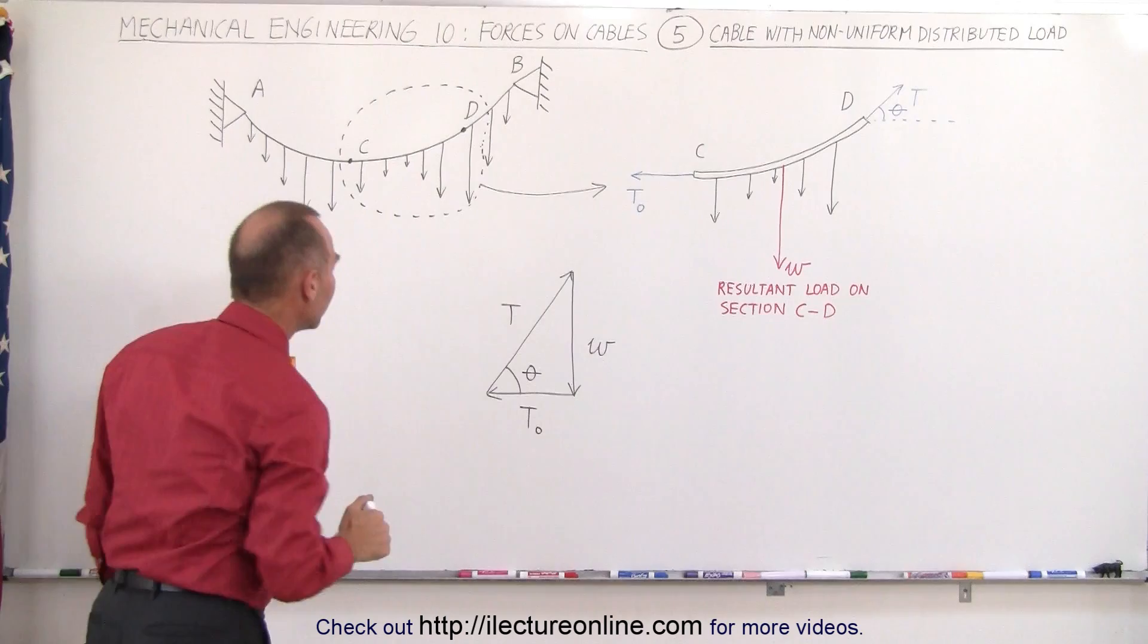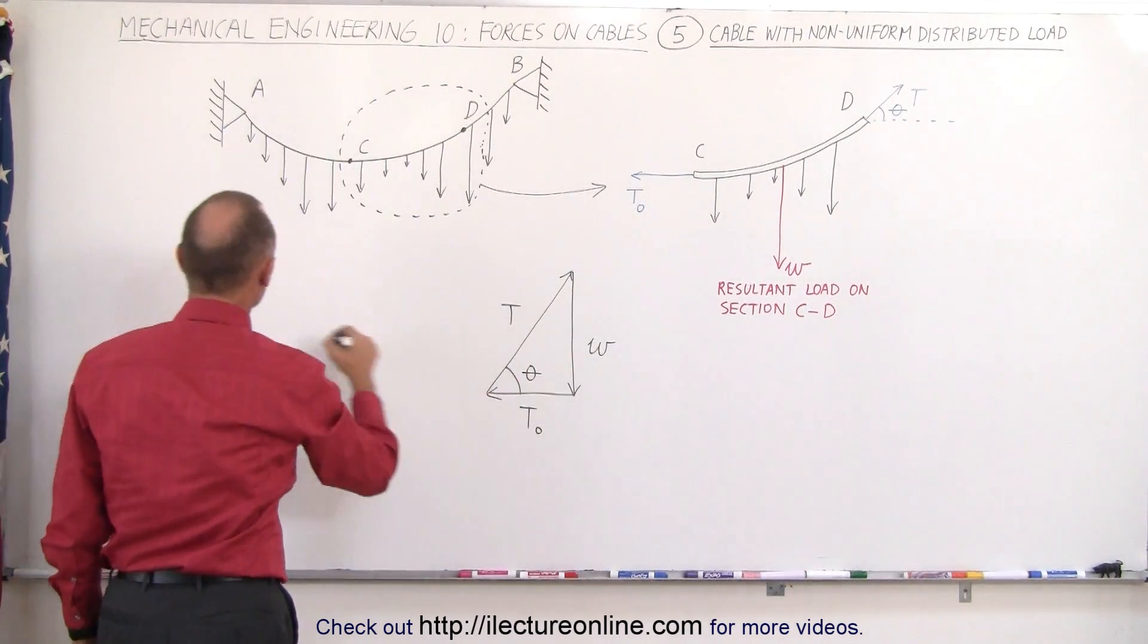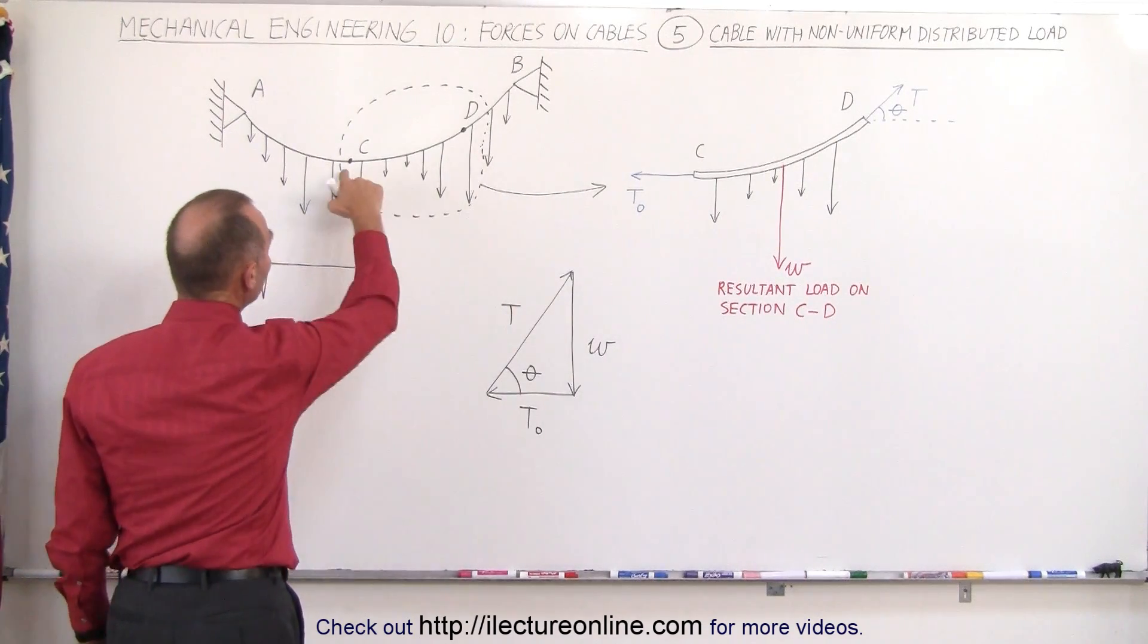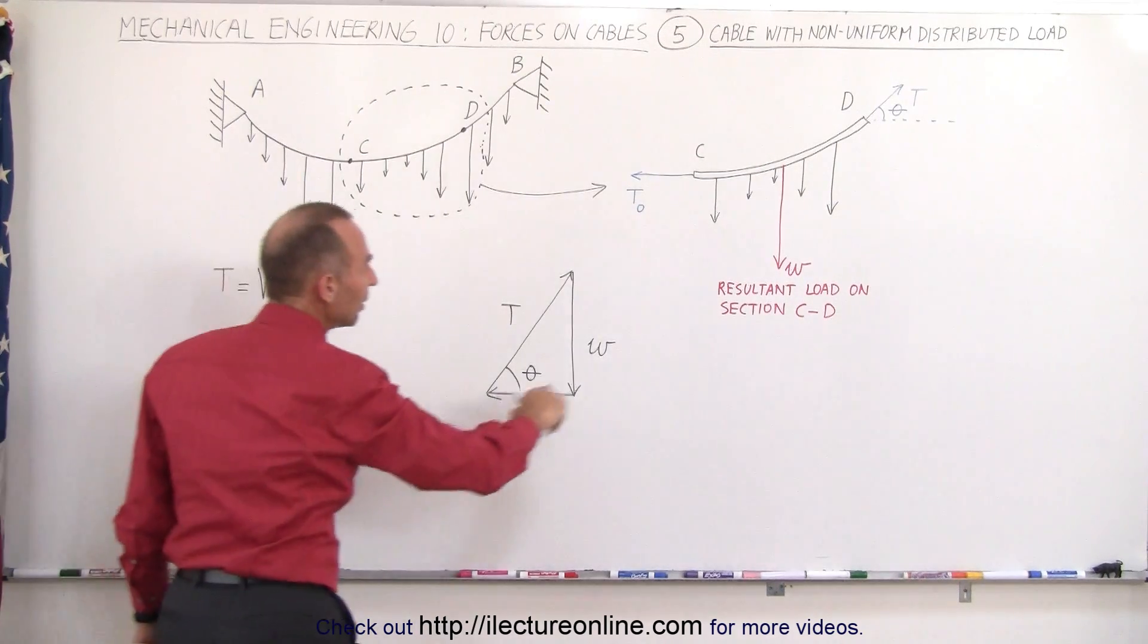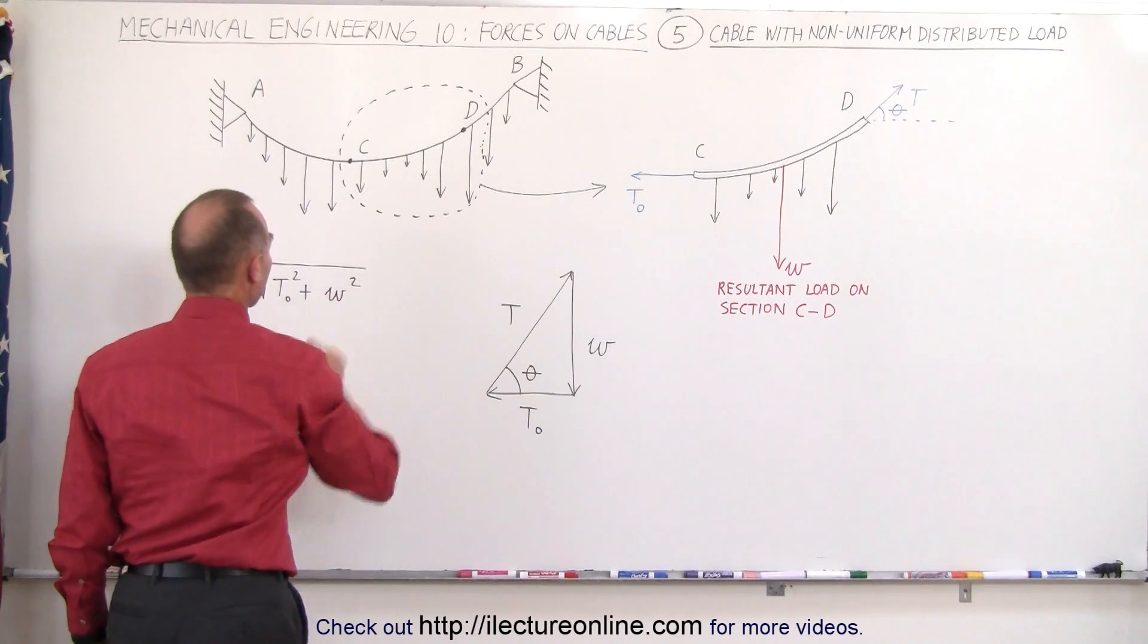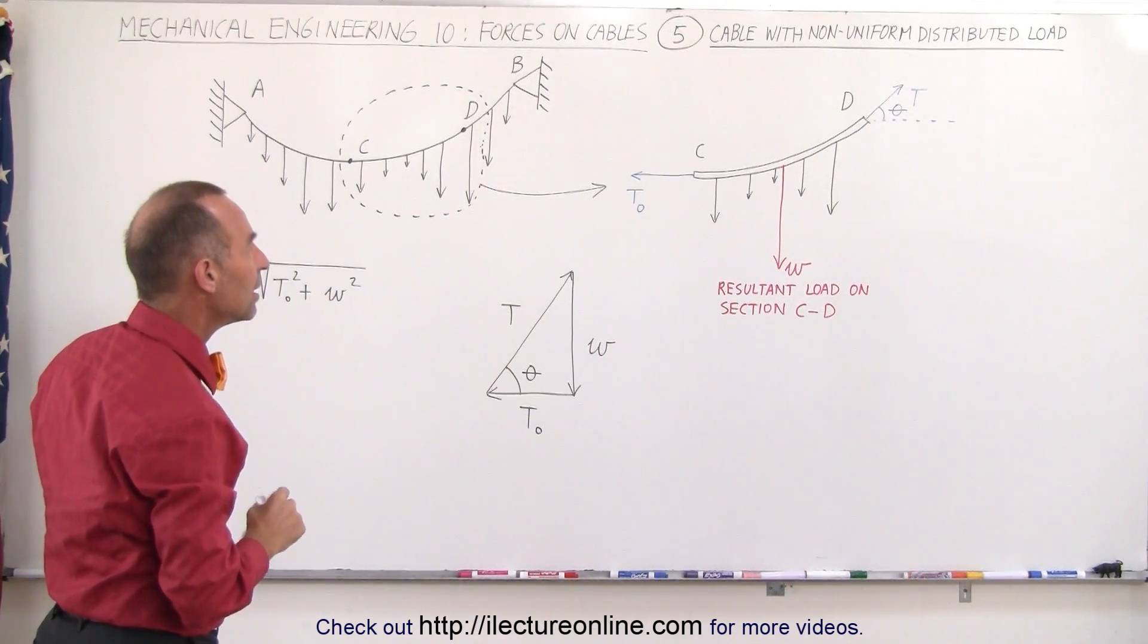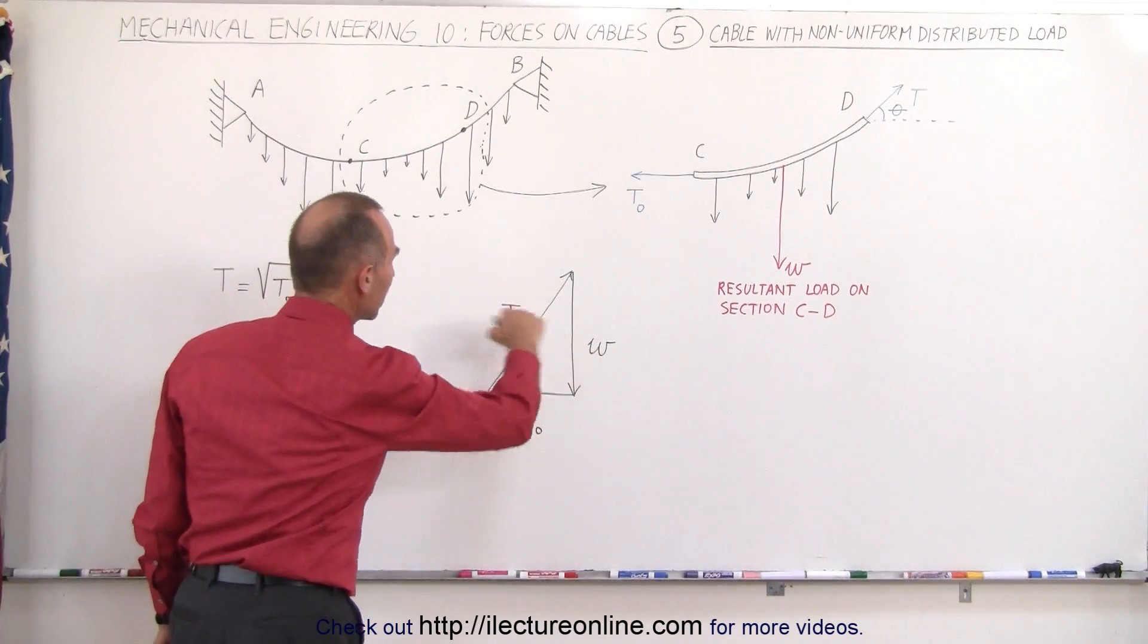Now some relationships between these. First of all, you can see that the tension, which is the hypotenuse of this triangle, is going to be equal to the square root of the tension at the lowest point squared, T sub zero squared, plus the resultant load on the section W squared.